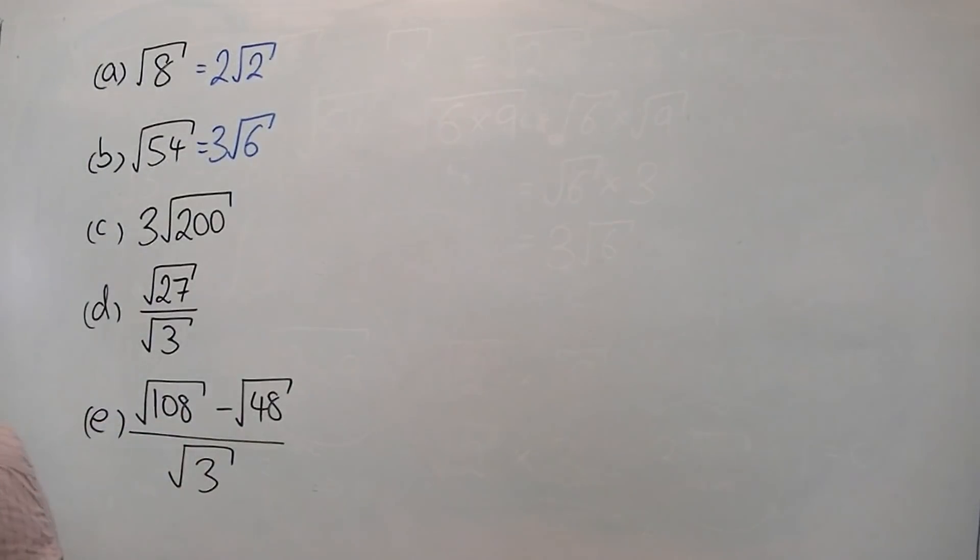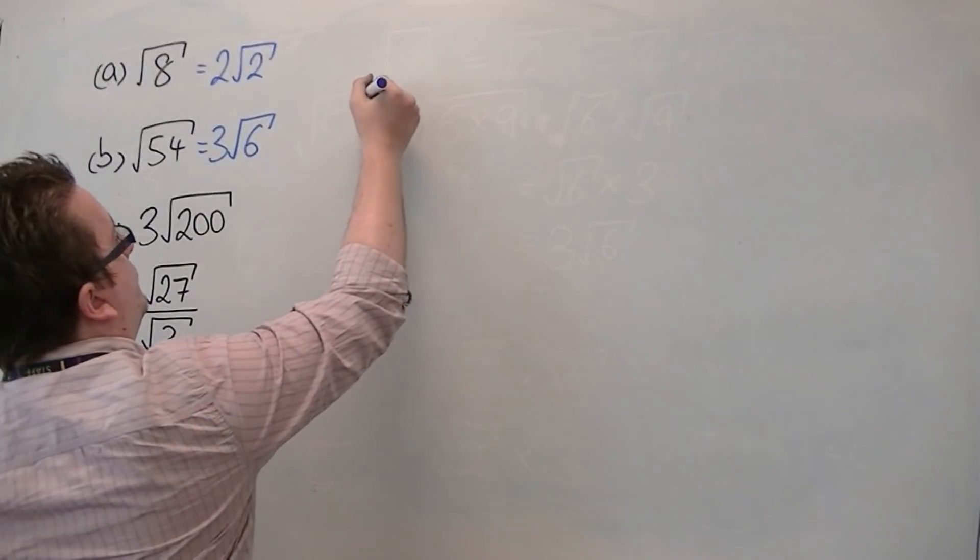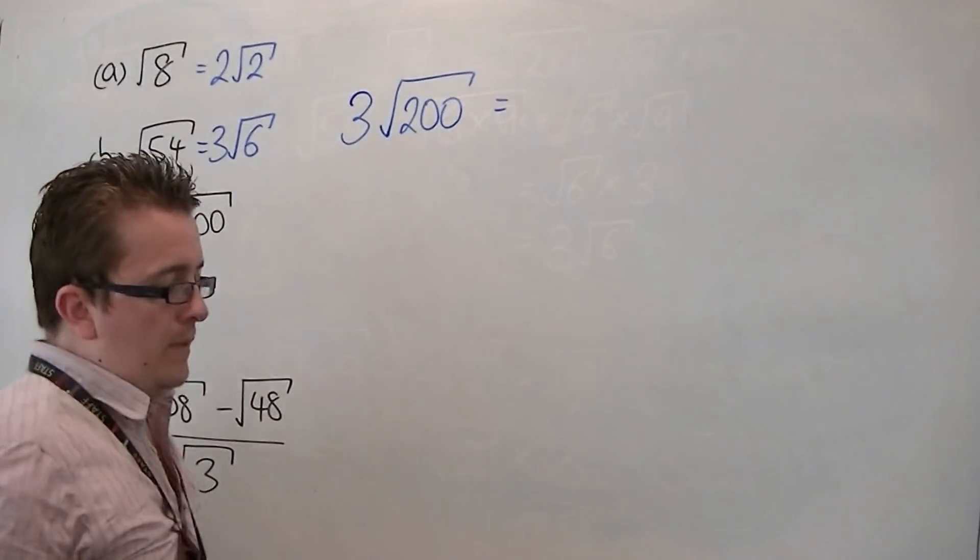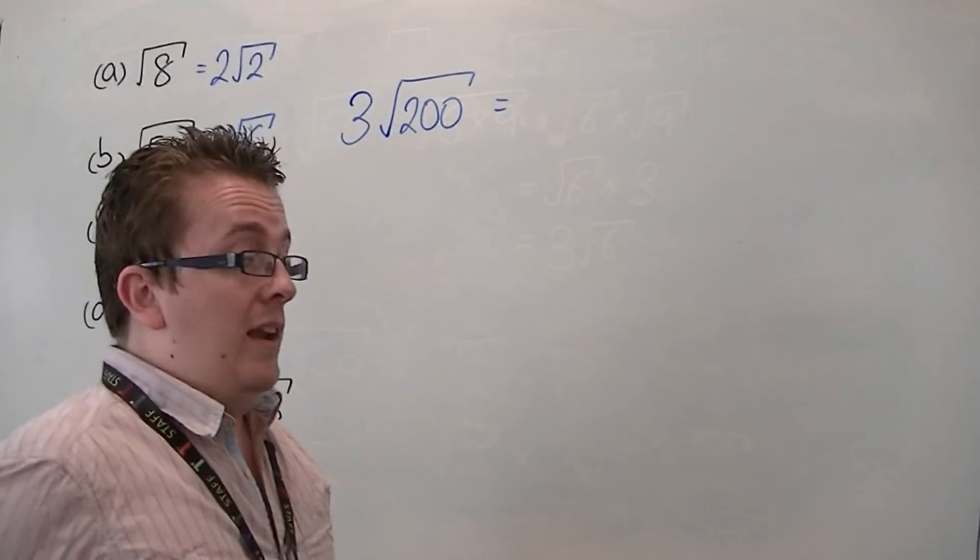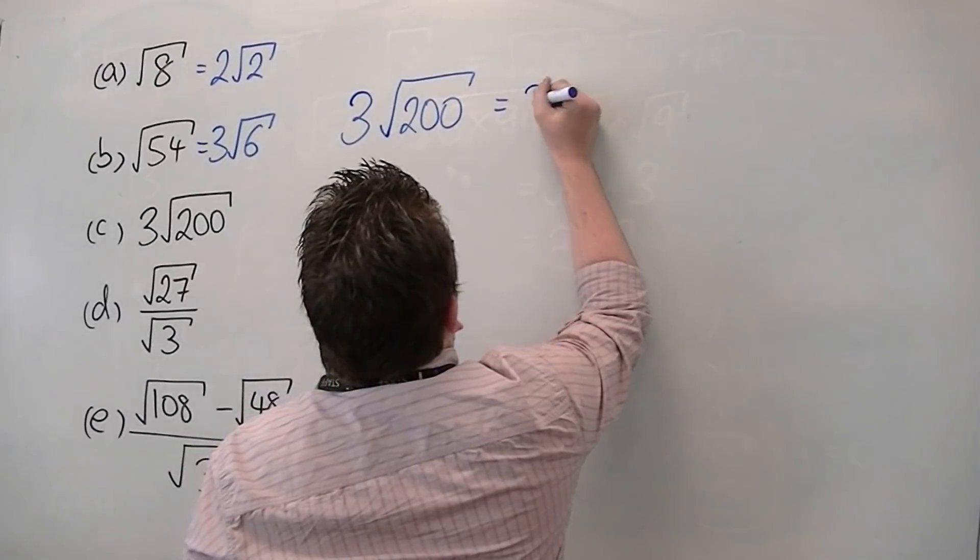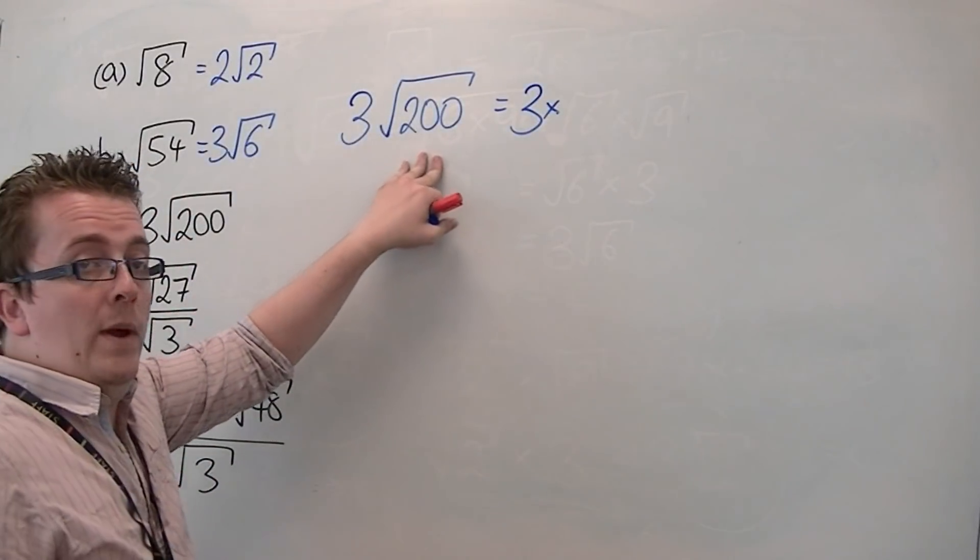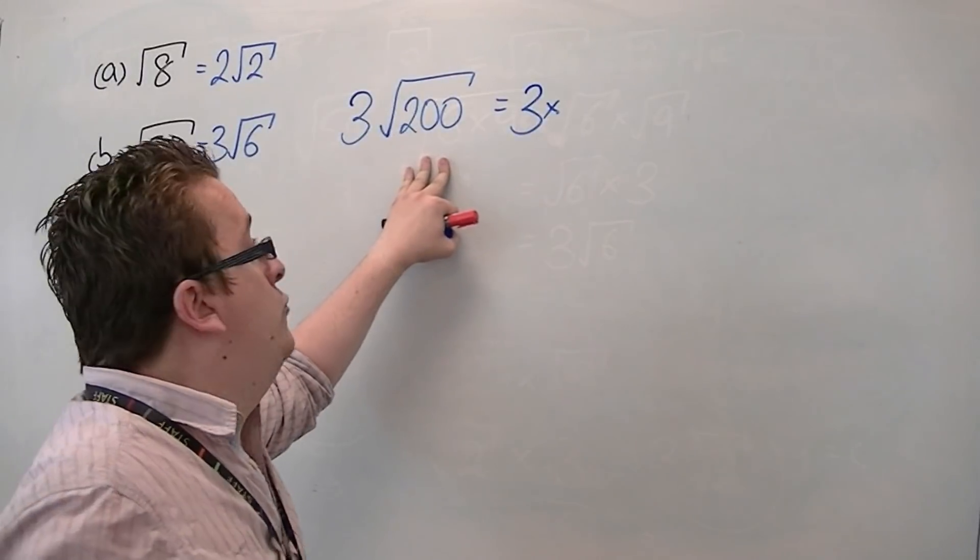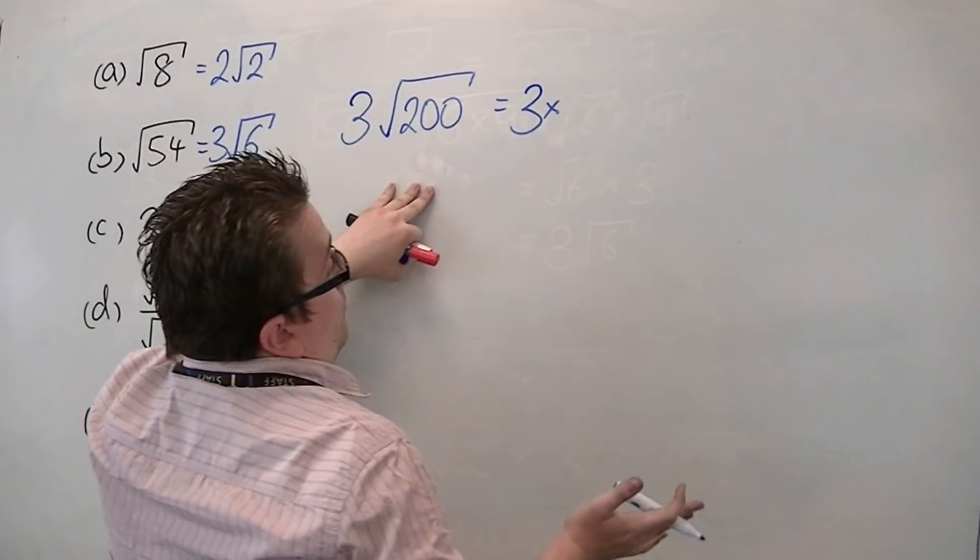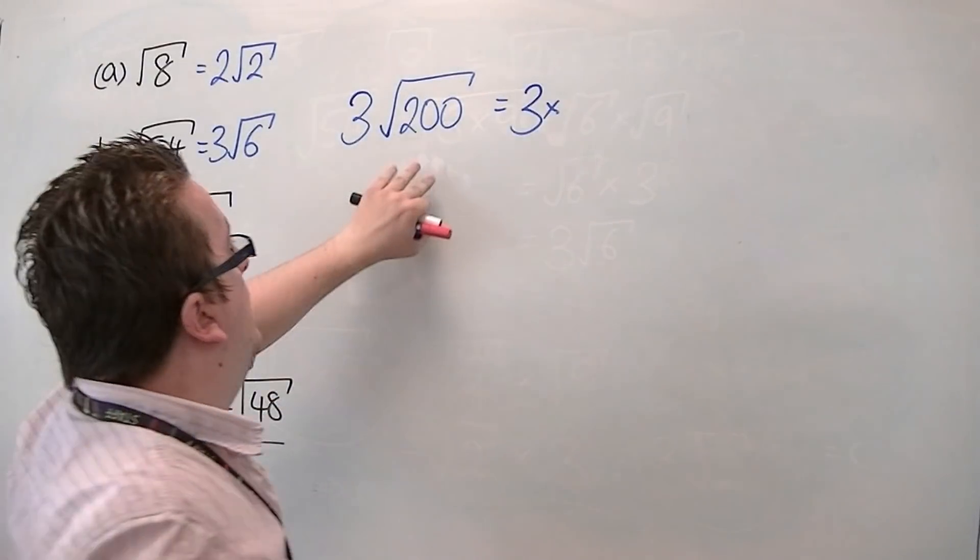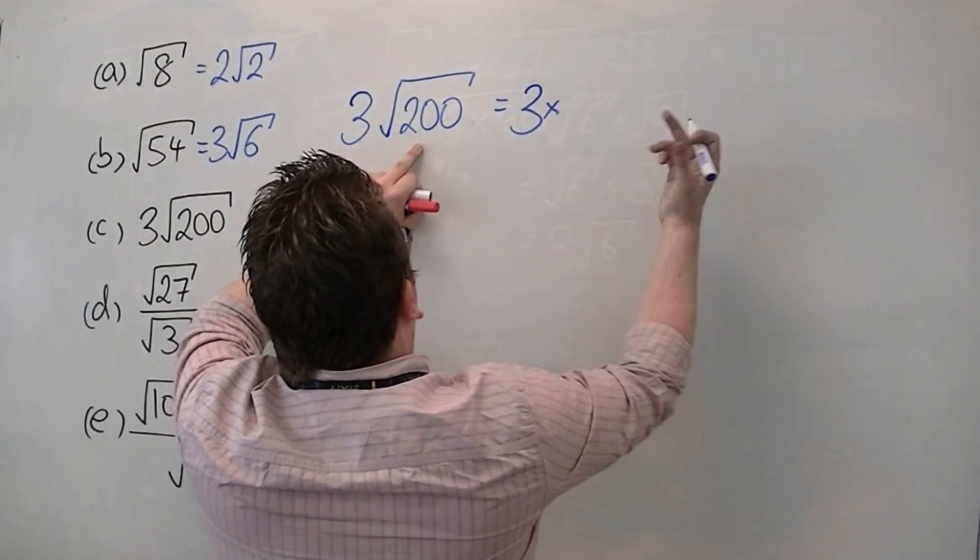Now we've got 3 times root 200. Well, leave the 3 alone. There's nothing really we can do with that. The 200, the square number that goes into 200 is 100. You could have put in 25. I'll show you how that works in a moment, actually. But if you did 100, then you could write that as 2 times 100 square rooted.